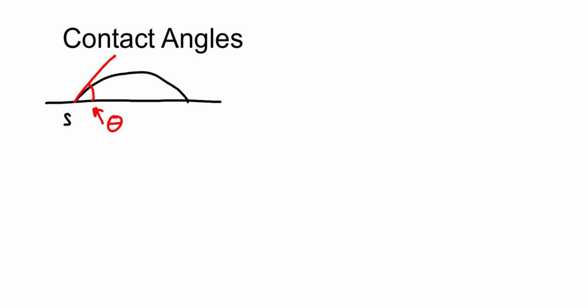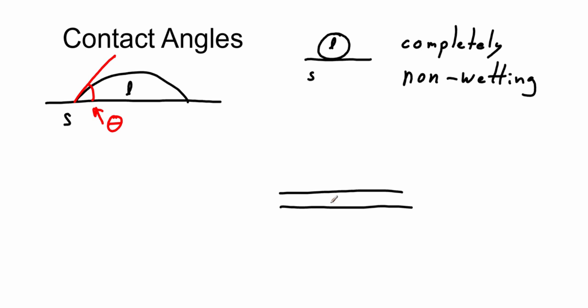We can imagine several scenarios for how a contact angle might look. We might have a drop that looks like this. So in this case, we have something that's completely non-wetting. On the other hand, we might have a surface where drops spread out to completely cover the surface. So we'd have our liquid and our solid, and this would be perfectly wetting.